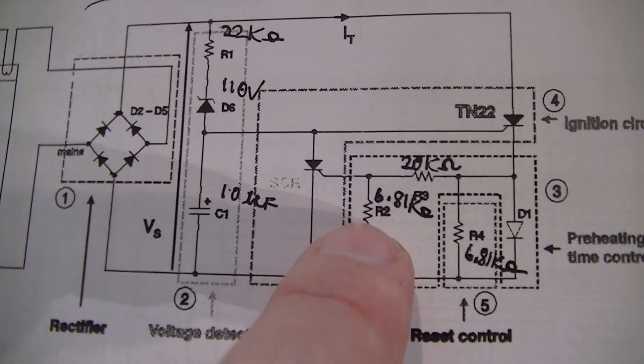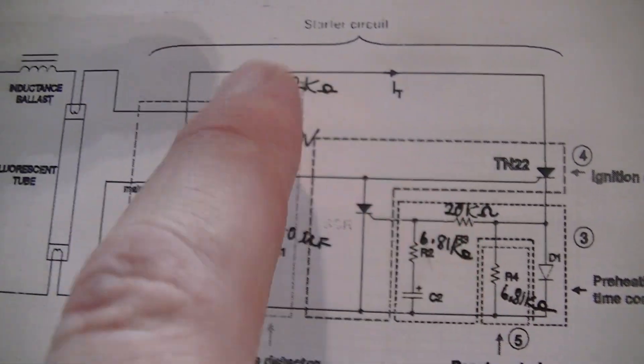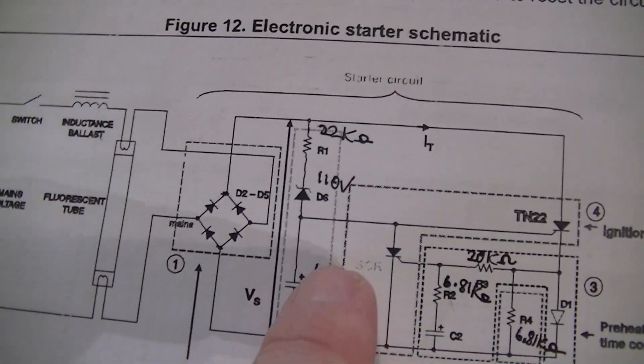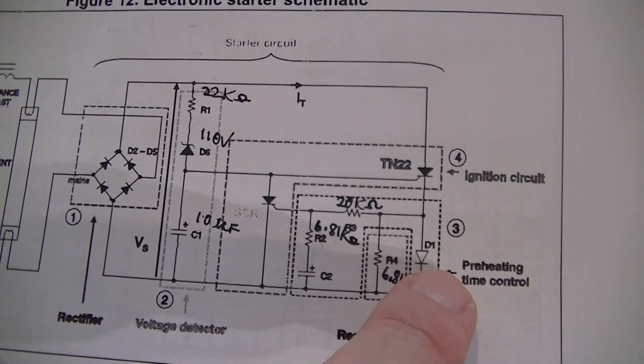So that resistor's 6.81K, that one's 20K, 22K right there. Just for that diode, 1N4007.